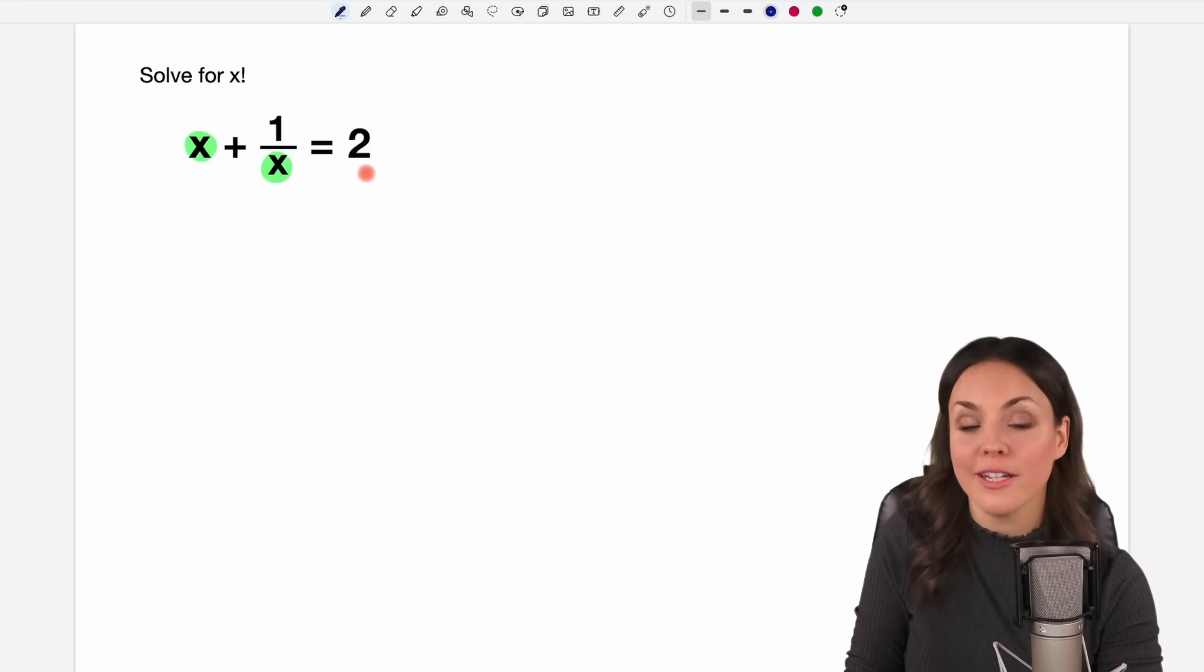So we have a fractional equation here and every time this is the case that x is part of the denominator, we have to get x out of the denominator. Otherwise we can't solve for x. So this would be the first thing I would do here.